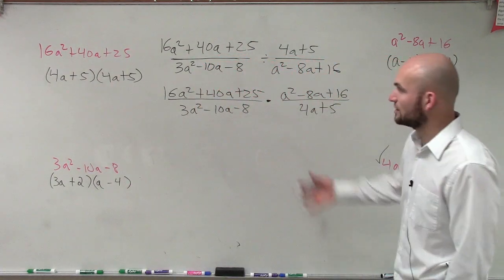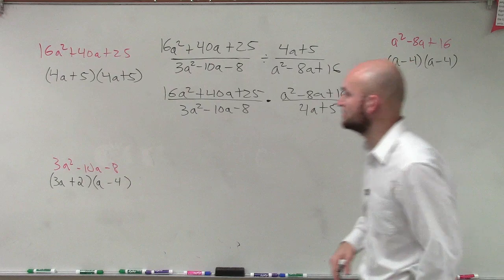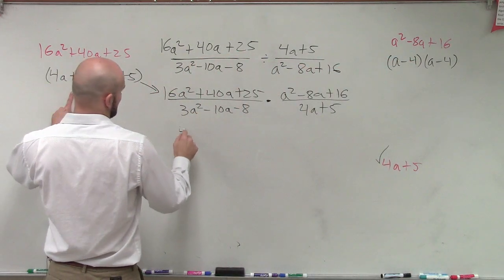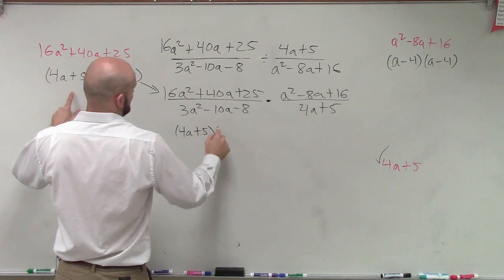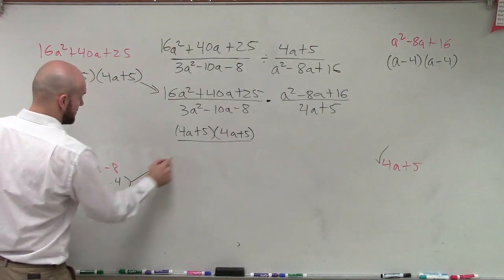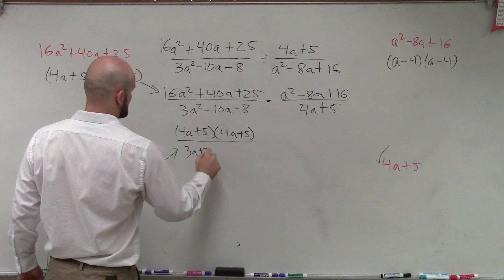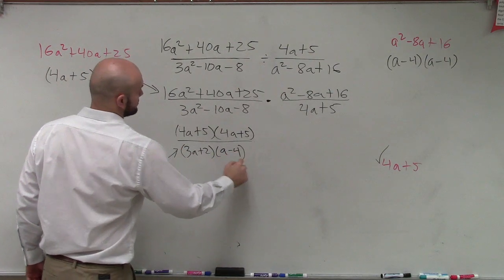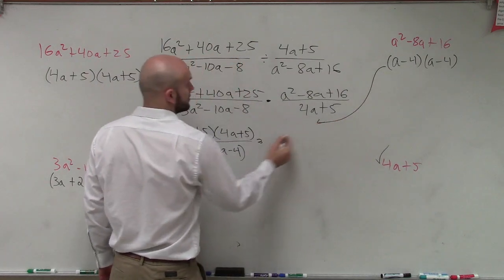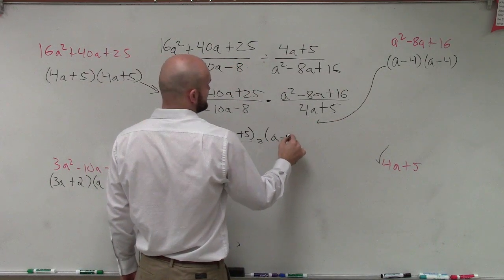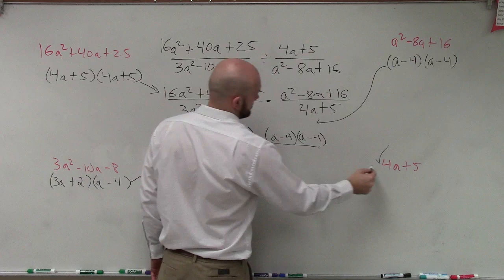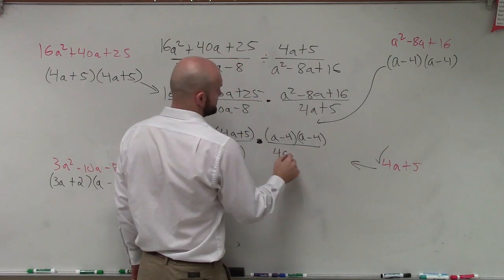So now, let's write in all of our factored forms. So our first factored form we had went to here. So I have 4a plus 5 times 4a plus 5 divided by my next factored form, which is 3a plus 2 times a minus 4 times my next factored form, which is a minus 4 times a minus 4. And then my last factored form, which is 4a plus 5.